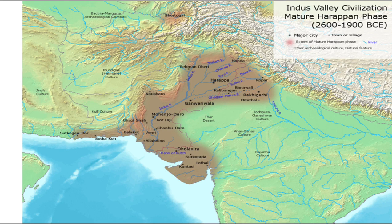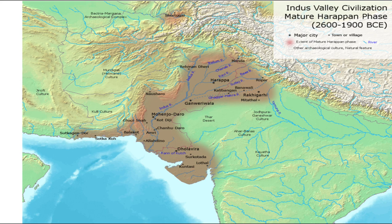Good morning students, welcome to Class 12th Arts. We begin our history syllabus with the first chapter, which is 'Bricks, Beads and Bones.' Our focus will be on Harappan town planning. Look at the map which shows the spread of the Indus Valley Civilization or the mature Harappan phase. Initially the name given was Indus Valley Civilization because the sites discovered were near the Indus and its tributaries, but later sites were found in Gujarat and Sindh, and hence the name was changed to Harappan.